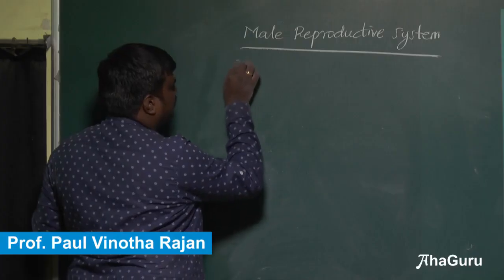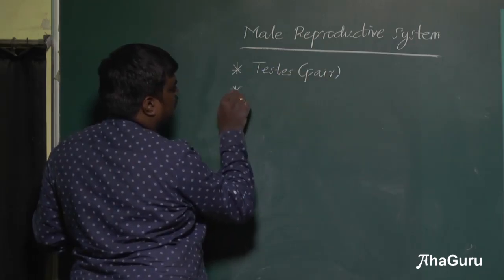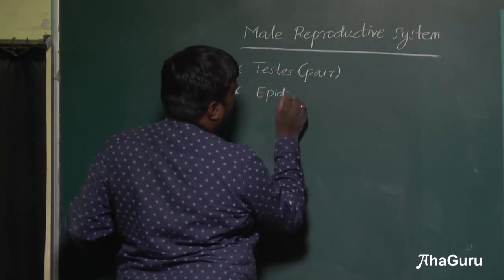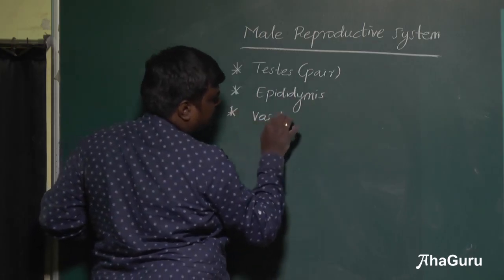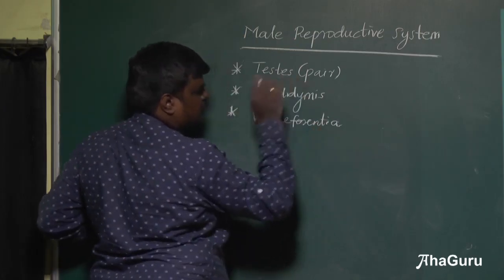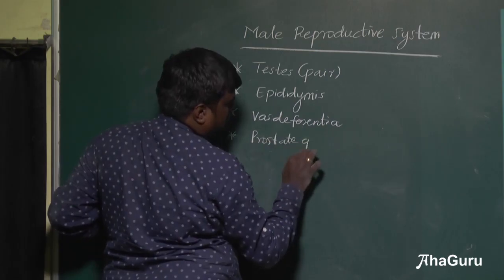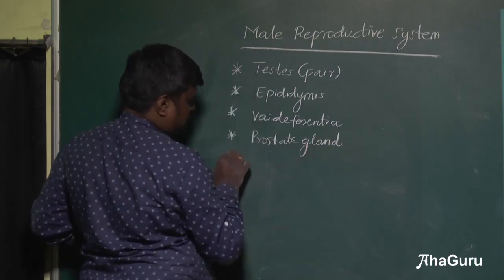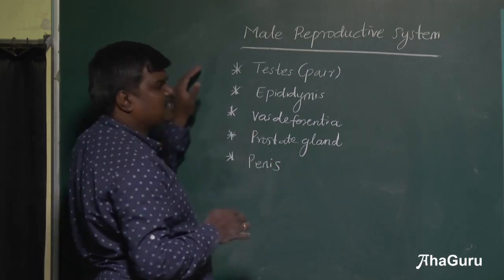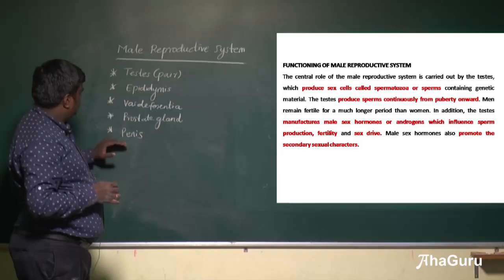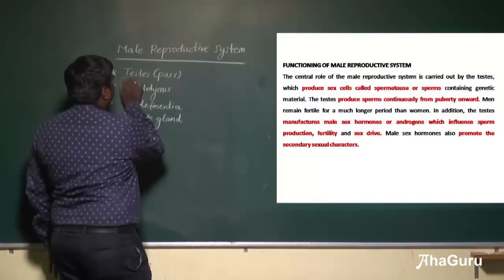The male reproductive system. The main parts are a pair of testis and epididymis, vas deferentia, prostate gland, and penis. These are the important structures, and the main function of the male reproductive system is carried out by the testis.